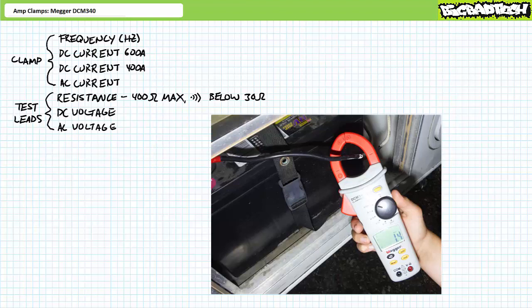In addition to measuring magnitude, DC amp clamps like the Mega DCM 340 can also be used to determine the direction of current flow. The positive magnitude of this 1.4 amps demonstrates current flows in the front of the amp clamp and out the back, i.e. out of the battery and into an electrical load. This battery is being discharged.